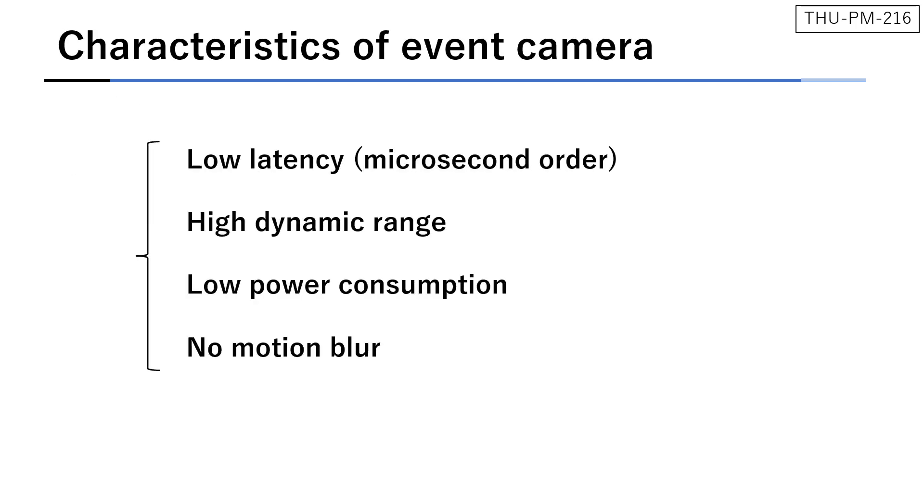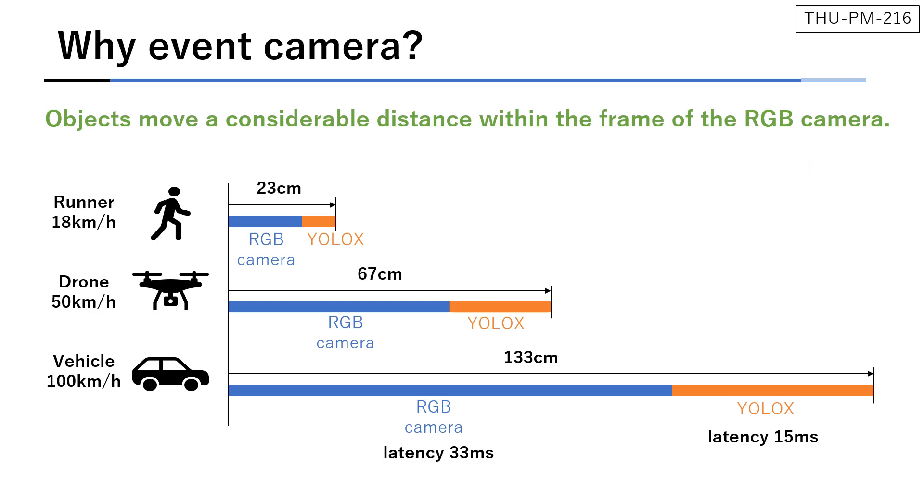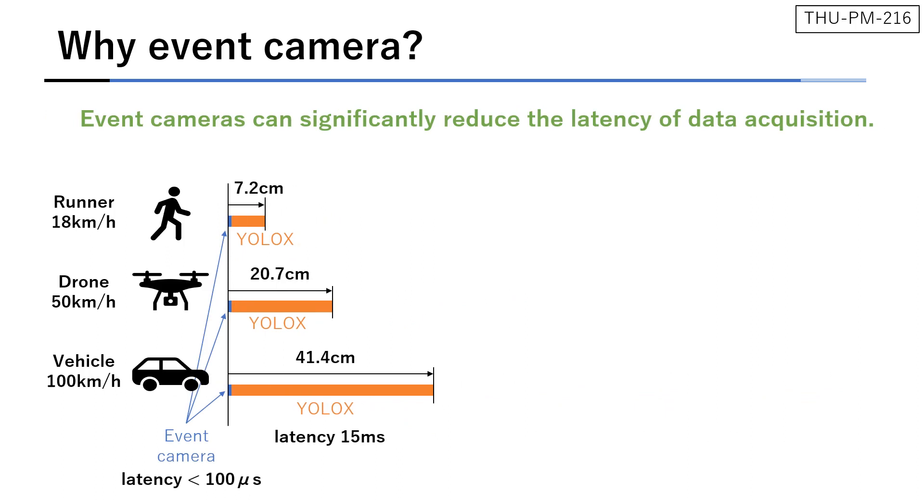Event cameras have many attractive characteristics. Among them, we are interested in its extremely low latency. This figure shows how far the objects travel within a detection process. Here, a standard 30 fps RGB camera and YOLO-X detector are used. We can see that the latency of the RGB camera largely affects the distance. With an event camera, the latency of the data acquisition can be significantly reduced.